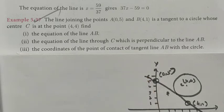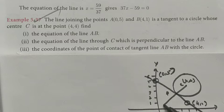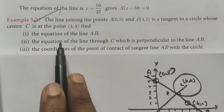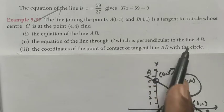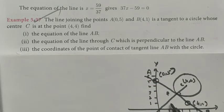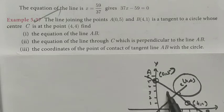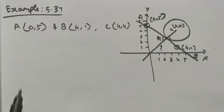Second, find the equation of the line through C which is perpendicular to line AB. If we draw the line from the center of the circle to the tangent, it is perpendicular by theorem. We also want to find the coordinates of the point of contact P.